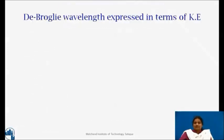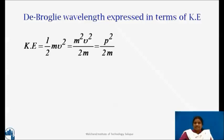Now, consider if a particle has kinetic energy KE, then kinetic energy is equal to half mv square is equal to m square v square upon 2 into m. So, p square upon 2m, hence lambda is equal to h upon root 2m multiplied by kinetic energy.